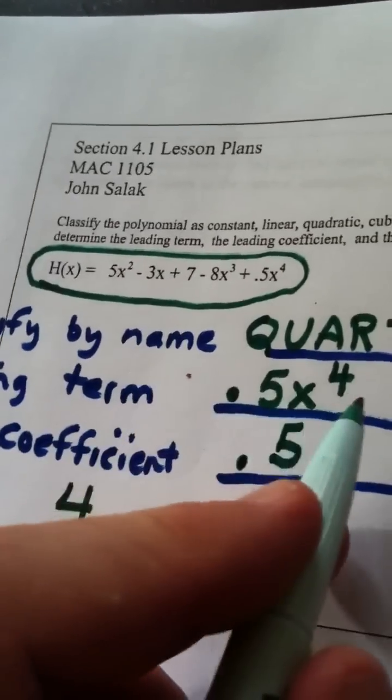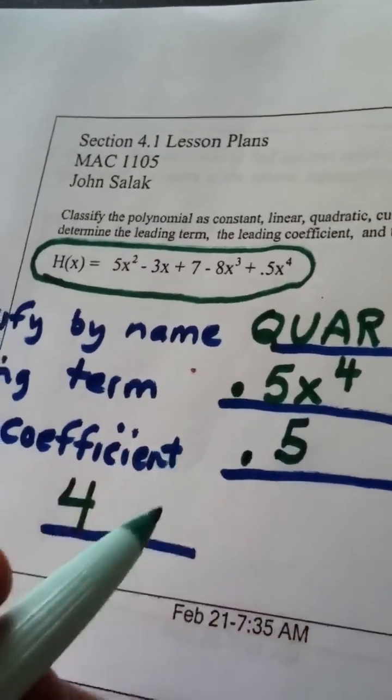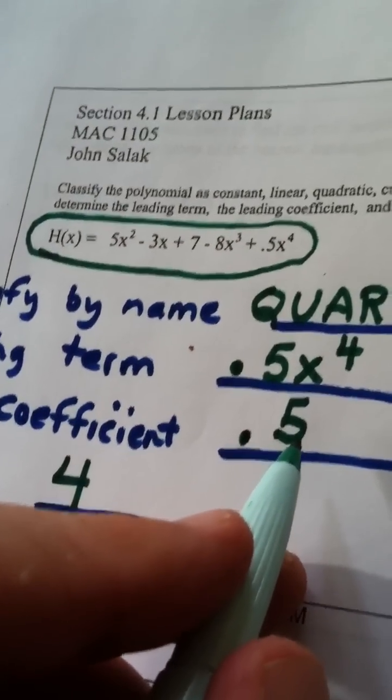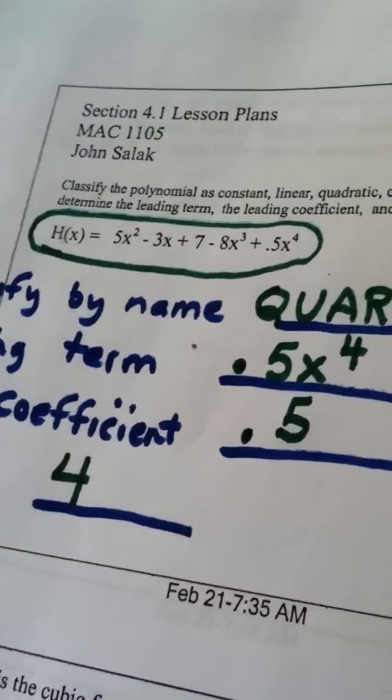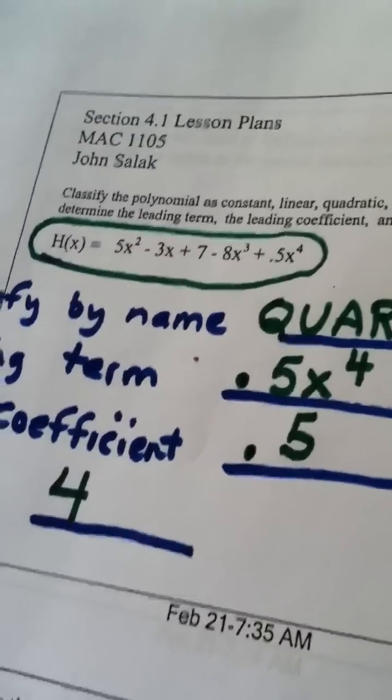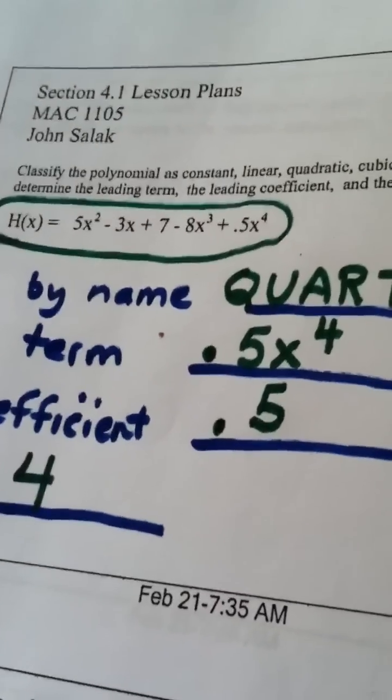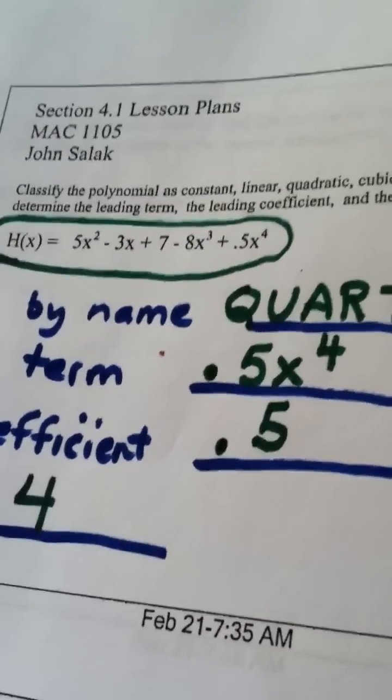So what I want you to be catching, the leading term involves the letters. The leading coefficient only involves the number that is truly with the leading term, but it's not the x part of it or the variable part of it.